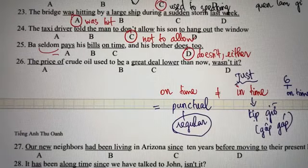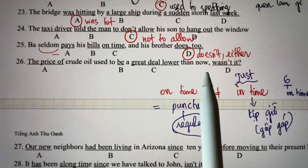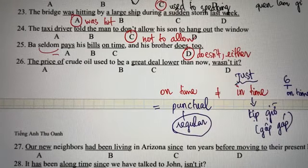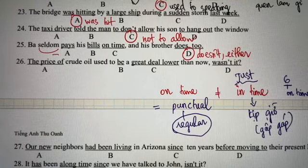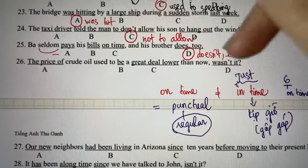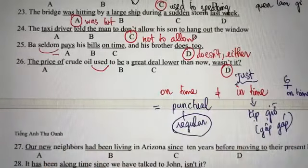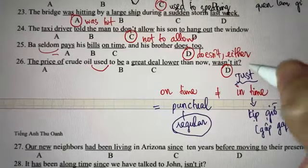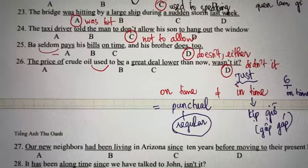Câu số 26: giá dầu thô thì đã từng khá là thấp hơn so với bây giờ. Chọn đáp án D. Ở đây có 'too' — kiến thức về động từ thường ở thì quá khứ. Sửa lại là 'didn't it' — không phải 'wasn't it' vì đây là động từ thường.